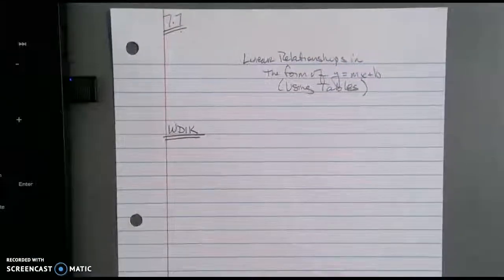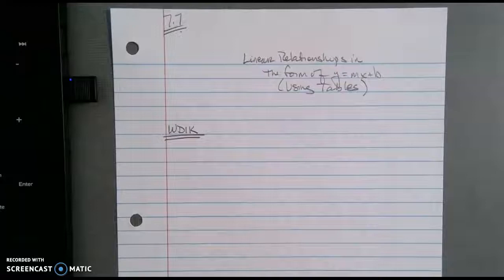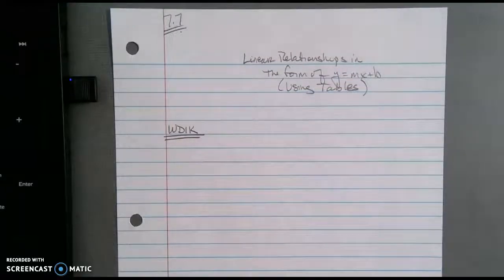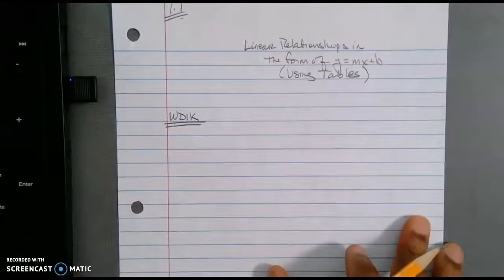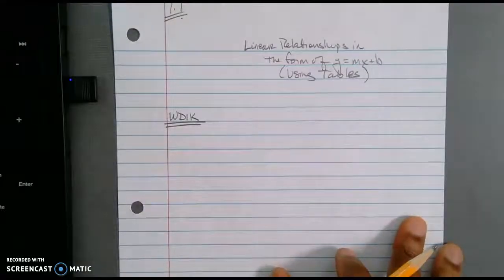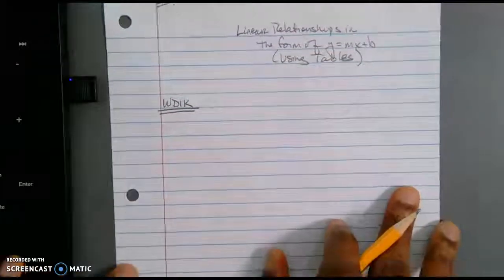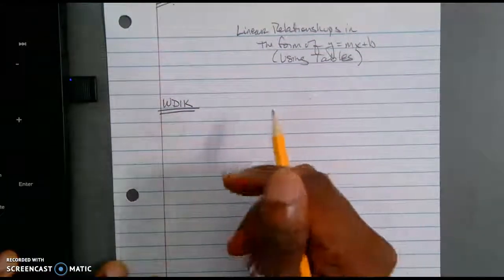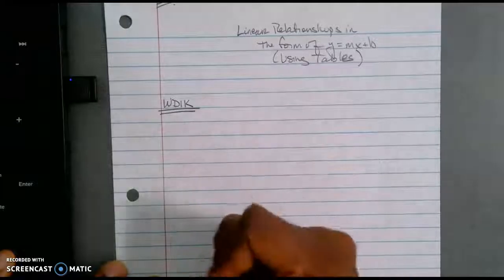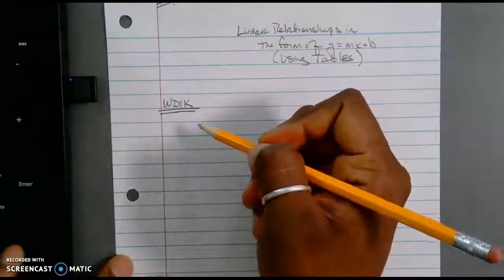All right. So as you see here, I've moved over to the document camera at this point. We're going to actually start by looking at the situation that we were looking at before. Now, if you remember, it says that a man's shoe size is going to be approximately three times his foot length in inches minus 22. And again, we're going to use a table to actually look at it in tabular form.